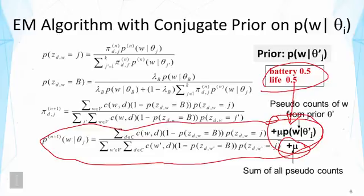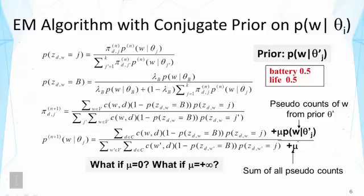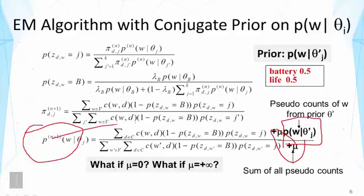This is an intuitively reasonable way of modifying the EM algorithm, and theoretically it still computes the MAP estimator. It's useful to think about two extreme cases of mu. If we set mu to zero, that essentially removes the prior — mu indicates our strength on the prior. If we set mu to positive infinity, the prior is so strong that we don't listen to the data at all, and in the end we make one distribution fixed to the prior. When mu is infinity, we basically let the prior dominate and set that distribution to precisely the prior distribution.